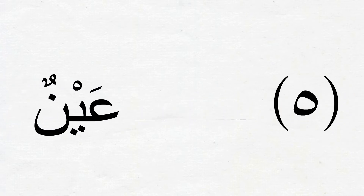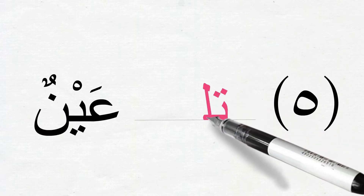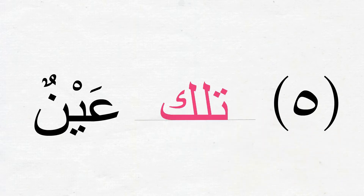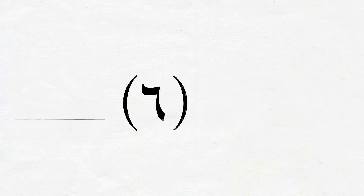Number 5: عَيْنٌ means 'an eye'. Was this a مُذَكَّر or مُؤَنَّث? Remember, it is a double body part, so it should be مُؤَنَّث. Let's write تِلْكَ then — تِلْكَ عَيْنٌ, that is an eye.